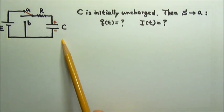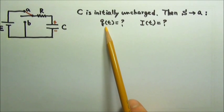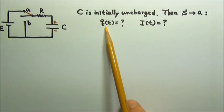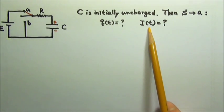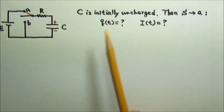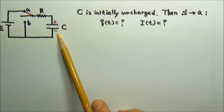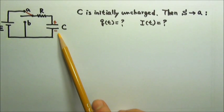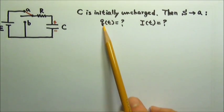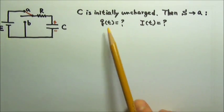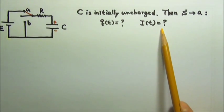During this charging process, the amount of charge on the plates changes according to time. The charging current also changes according to time, because eventually the capacitor will be fully charged and no more charging current will flow. Now let's find Q and I as functions of time.